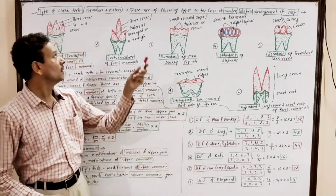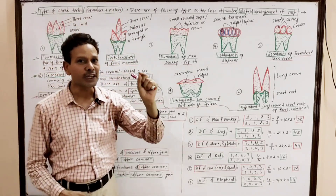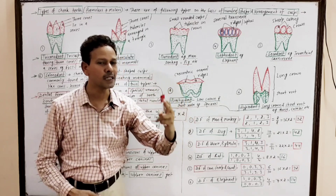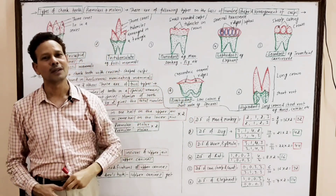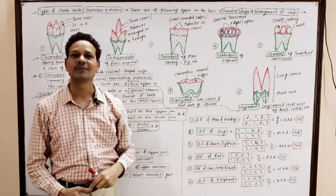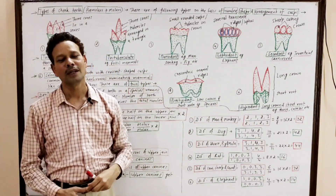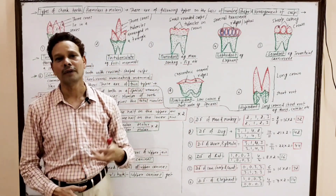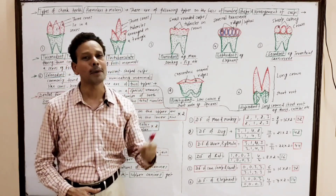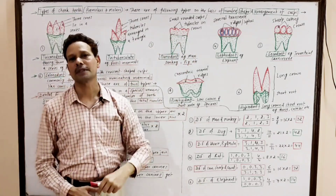First, I will discuss different types of cheek teeth. As we know, premolars and molars collectively constitute cheek teeth, and these are of different types on the basis of size, structure of cusps, and on the basis of number and arrangement of cusps.